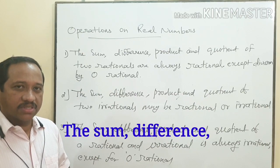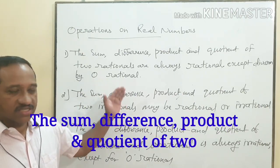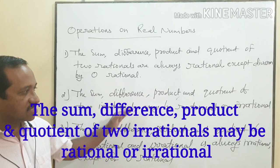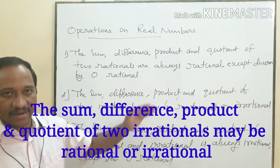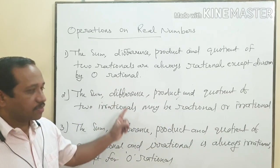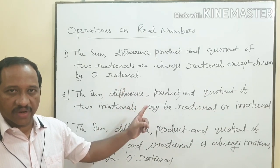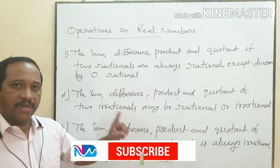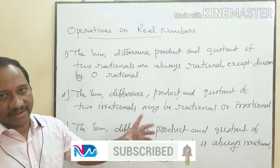The second point is: the sum, difference, product and quotient of two irrationals may be rational or irrational. That means if you add, subtract, multiply or divide two irrationals, the answer may be rational or irrational.